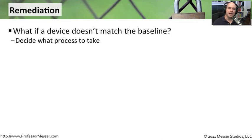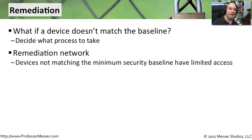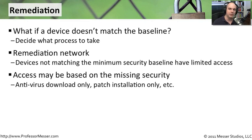If you've created these baselines and you're constantly monitoring them, and you realize one of your systems does not match what you consider to be a baseline for the security of that system, you have to decide what process to take — generally something called remediation. We take those systems and give them access only to a special remediation network. If a system plugs into the network and doesn't have the latest antivirus signatures, we put them in a special network automatically. That network would only have access to download the latest antivirus patches, make sure they have the latest OS patches, but keep them in a place where they cannot cause a problem.